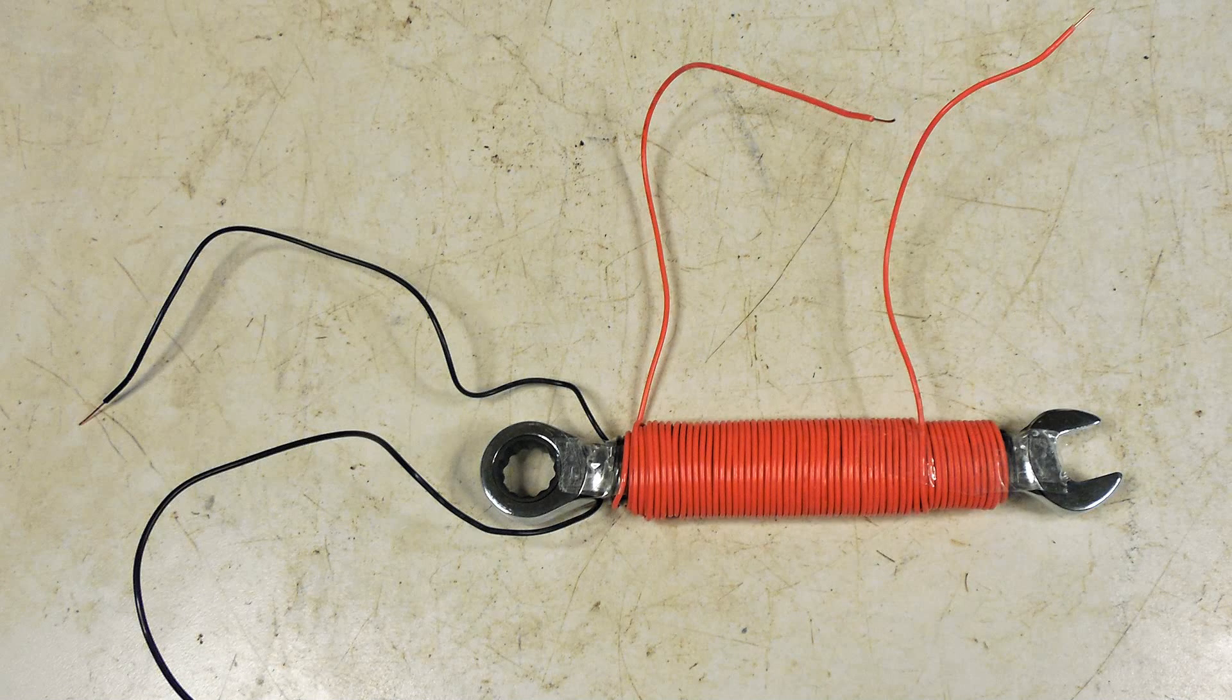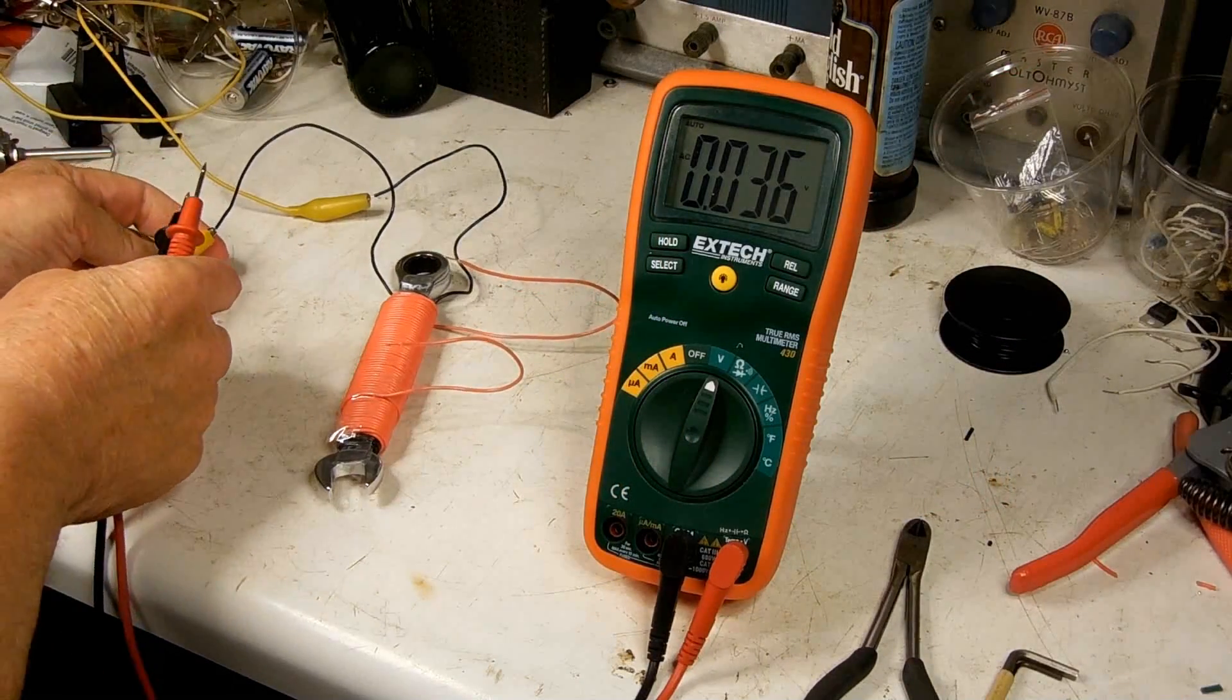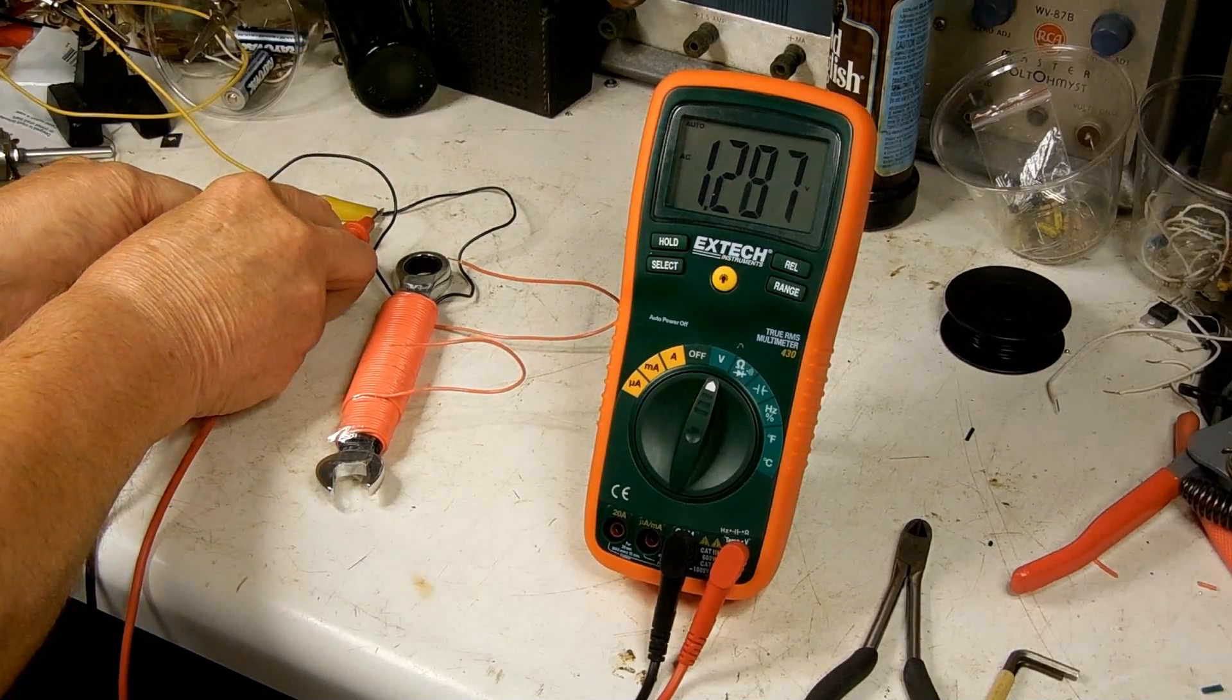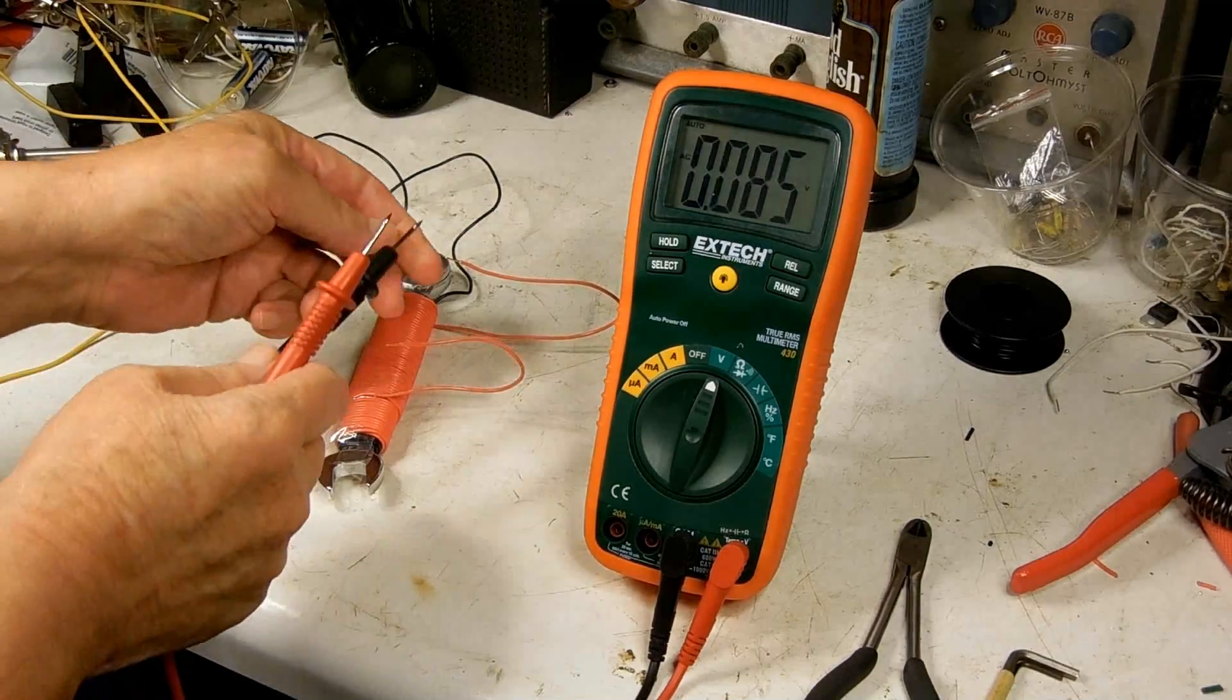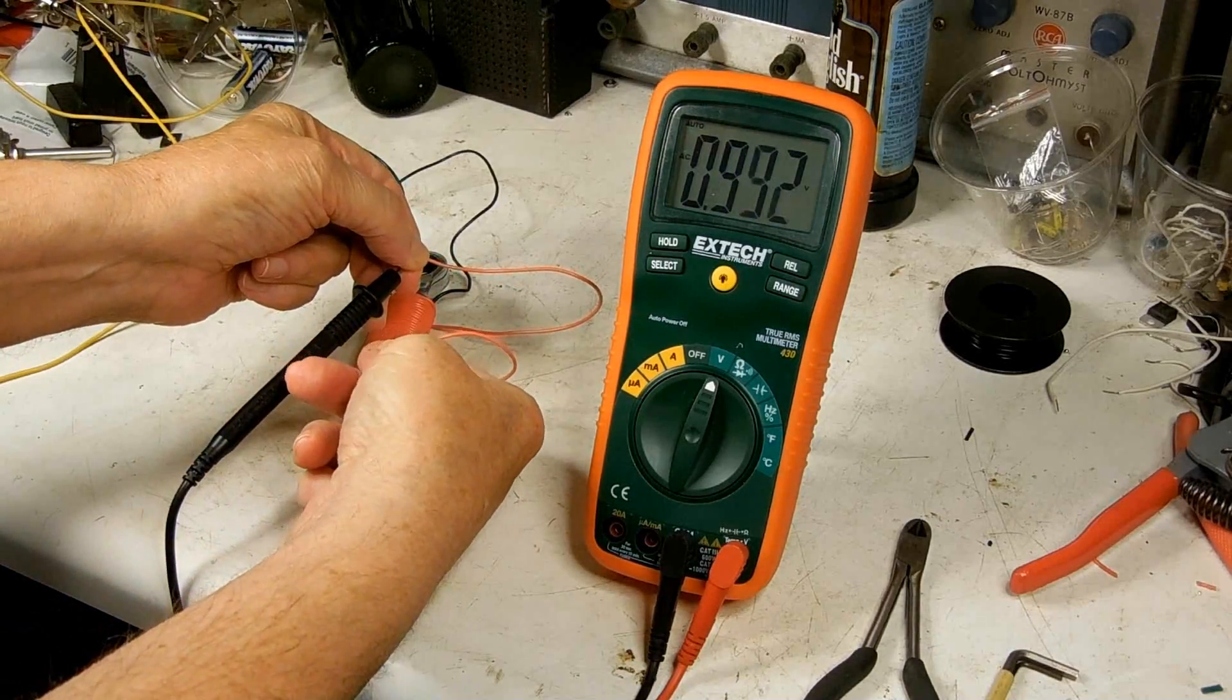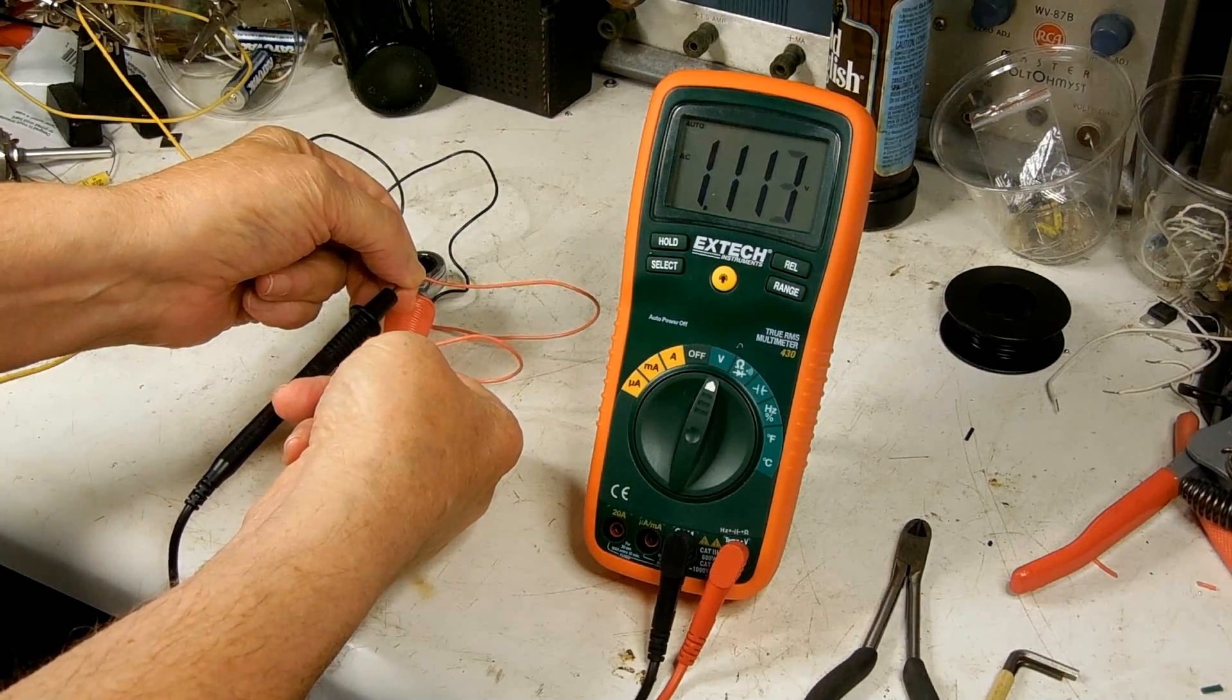Let's take a look at the input and the output of this transformer. I've got the meter to read AC volts. Now I'm going to go across the primary, the input. And we've got about 1.3 volts. And here's the secondary. Across that we have about 1.1 volts.